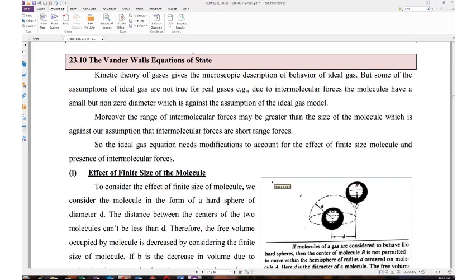Some of the assumptions of ideal gas are not true for the real gases. Due to intermolecular forces, molecules have a small but non-zero diameter, which is against the assumption of the ideal gas. So this first point is what assumption is wrong.